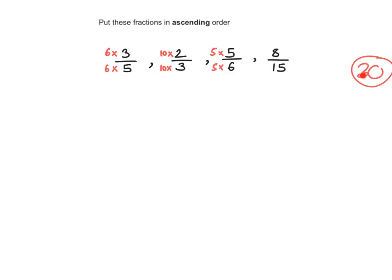The last fraction has denominator 15. How do I make 15 into 30? I just need to multiply by 2. So I multiply both the denominator and the numerator by 2. Now let's work these out. 6 times 3 is 18, and 6 times 5 is 30, so that's 18 over 30. Then 10 times 2 is 20, so that is 20 over 30.